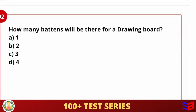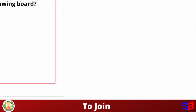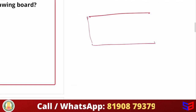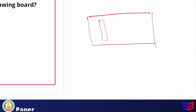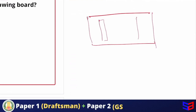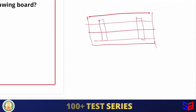Next question: how many battens will there be for a drawing board? In a drawing board there are many battens. This is a back view — on top there is a horizontal surface. On the bottom surface there are two battens. The drawing board is made up of a number of strips, and the bottom surface consists of two battens.